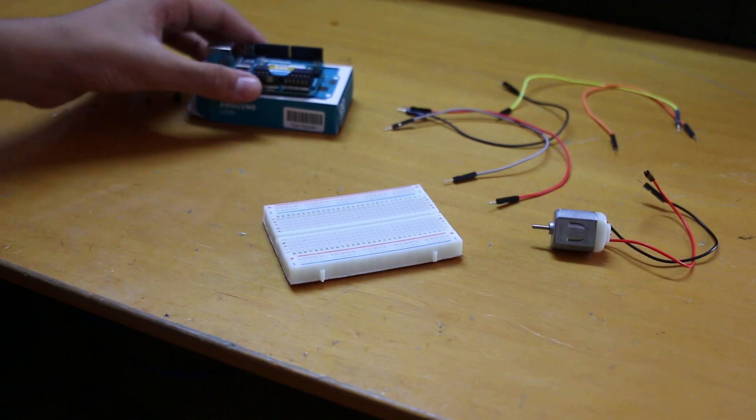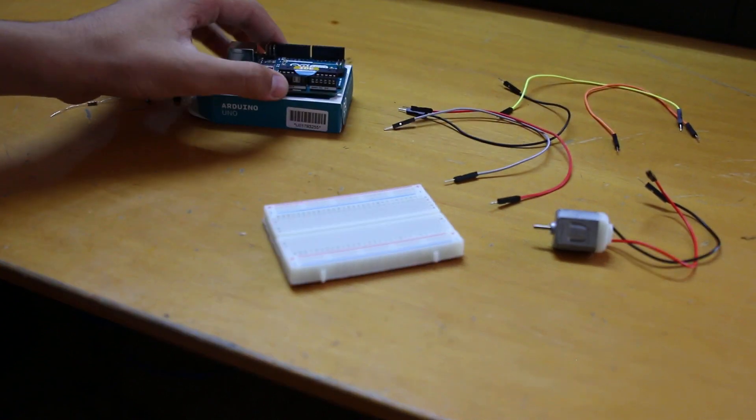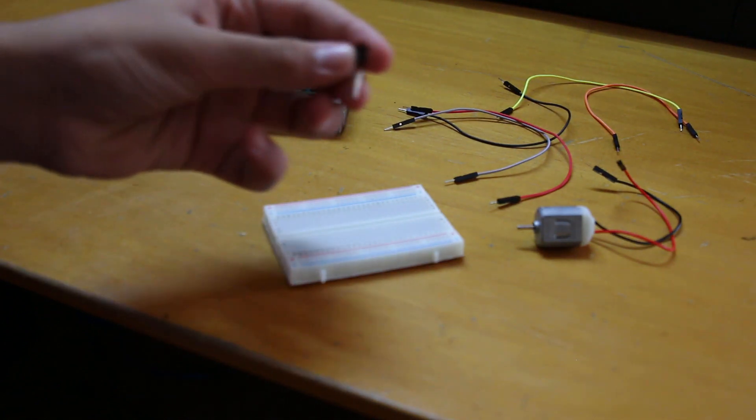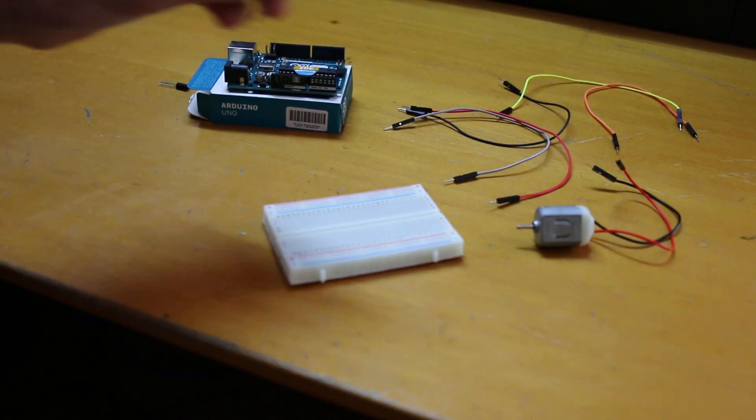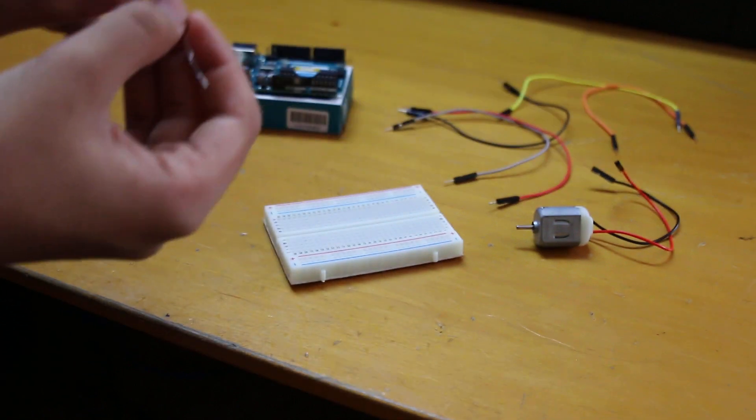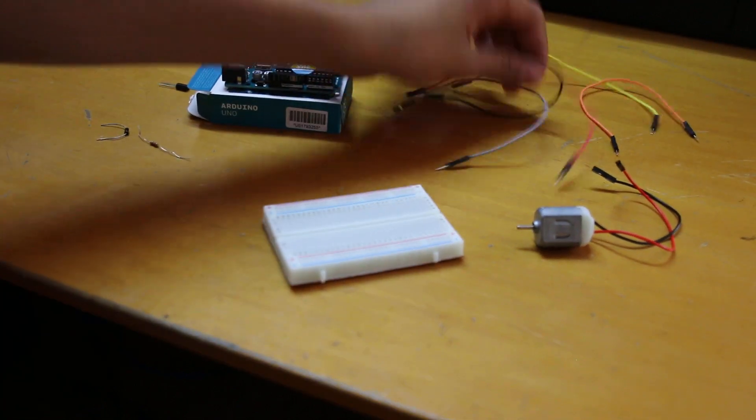So first let's look at the parts that we'll need. We need an Arduino Uno, a DC motor, a transistor which I'll be explaining, a diode which I'll also be explaining, and a resistor, preferably like 220 ohms, and some wires.